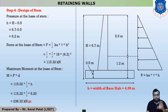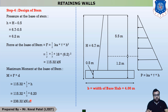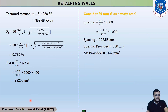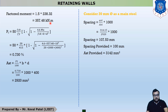When designing any component, we must use factored loads and factored moments. The moment of 238.32 kNm is the unfactored moment. The factored moment is 1.5 × 238.32, where 1.5 is the factor of safety, giving a factored moment of 357.48 kNm.